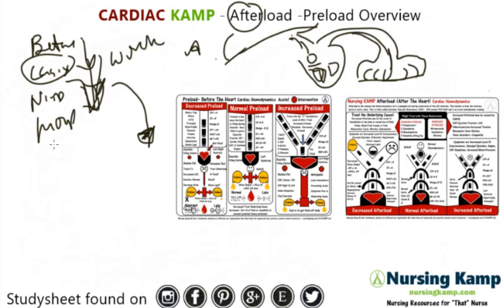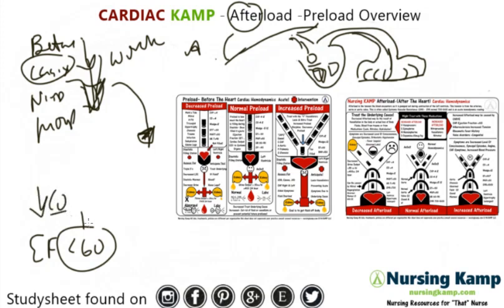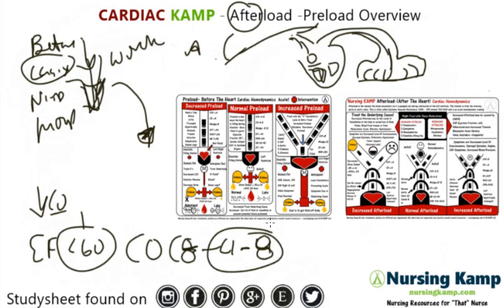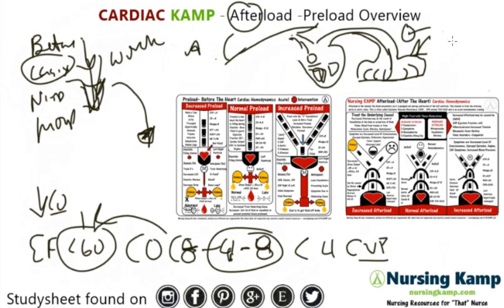Some normal hemodynamics: ejection fraction is 60% and needs to be greater than that. If it's less than 60%, there's decreased cardiac output. For cardiac output, I think of CO — add an O, that gives me 8, and half of 8 equals 4, so cardiac output is normally 4 L/min. If there's a low output volume, it will be less than 4. CVP reflects peripheral fluid — fingers and toes — and is normally 4 to 8. 8 is too much fluid; 4 is not enough.